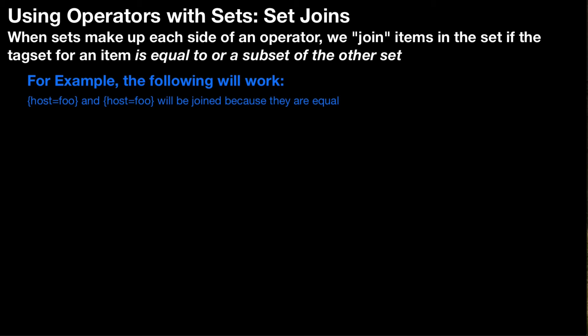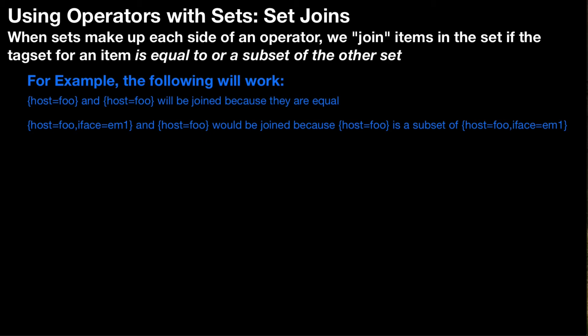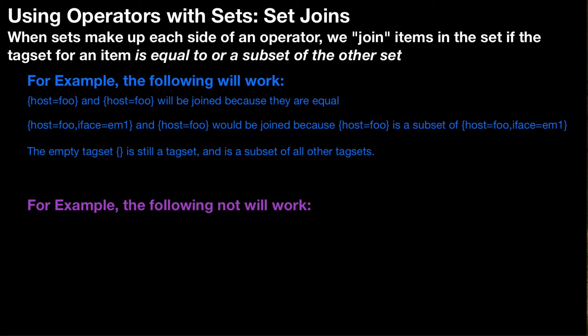You can have host equals foo and host equals foo because those are equal tag sets. You can have host equals foo, iface equals em1 as one tag set, and host equals foo as the other tag set — they would be joined because host equals foo is a subset of host equals foo and iface equals em1. You also can't have host equals foo joined with host equals bar because the tag values are different. And you can't have host equals foo iface equals em1 joined with host equals foo iface em2 because those iface values are different.